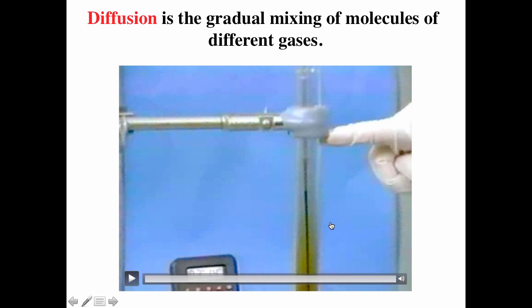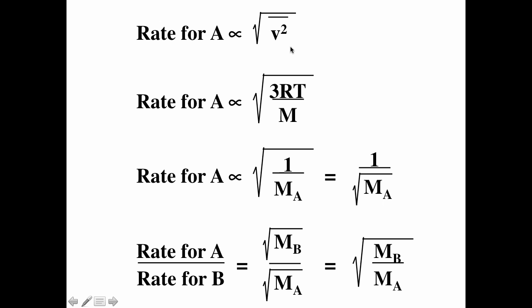Bromine has a very slow rate of diffusion and effusion because it has a large molar mass. The bromine particles are actually moving really fast, but because there are a lot of collisions, the rates of diffusion and effusion are not that fast. The rate of diffusion and effusion is proportional to the root mean square speed, which equals √(3RT/M). So the rate is inversely proportional to the square root of the molar mass — the bigger the molar mass, the slower the rate.